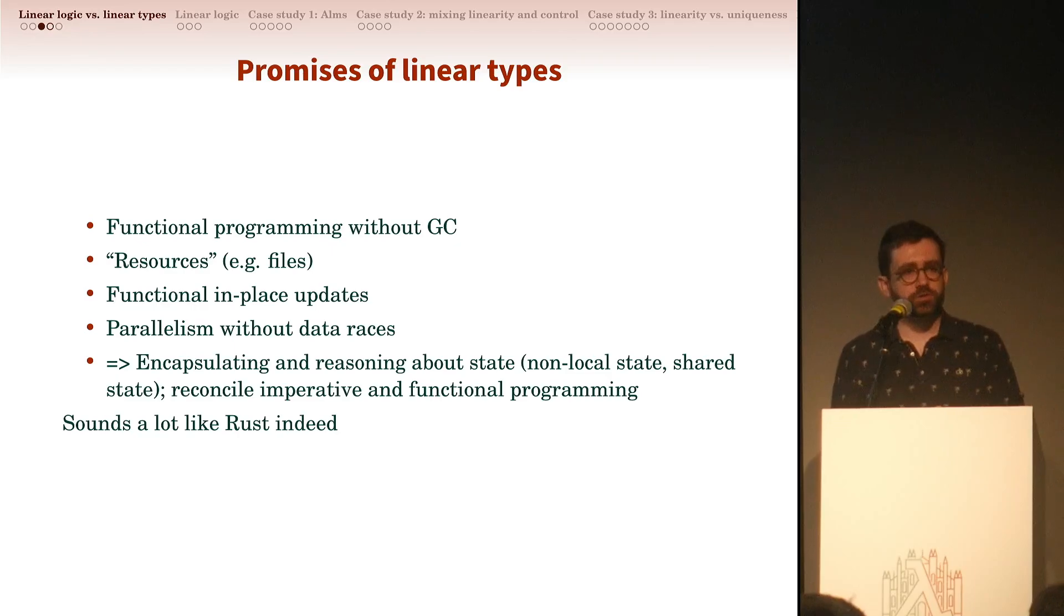For people who are not familiar with linear types, linear types make a lot of promises. You'll be able to do functional programming without a GC, manage resources safely, do functional programming with in-place updates without allocations, and program for parallelism without data races. Seen more abstractly, linear types promise to encapsulate state—non-local state, shared state, and so on—reconciling imperative and functional programming. That's quite a huge promise, and it also sounds a lot like Rust in terms of promises.